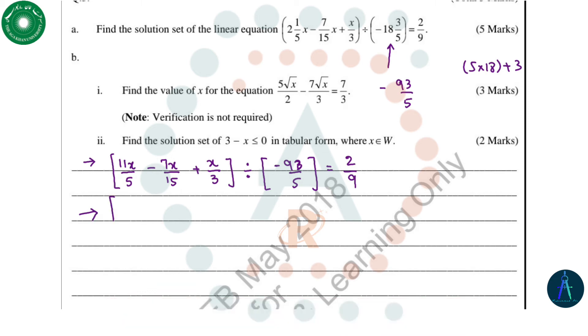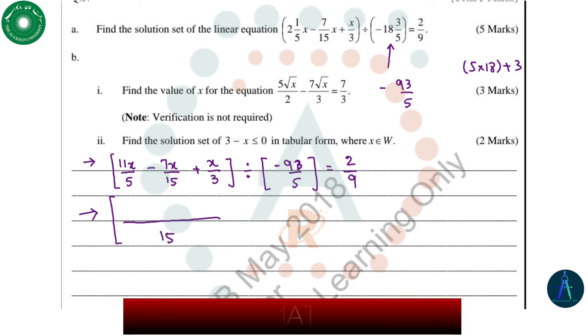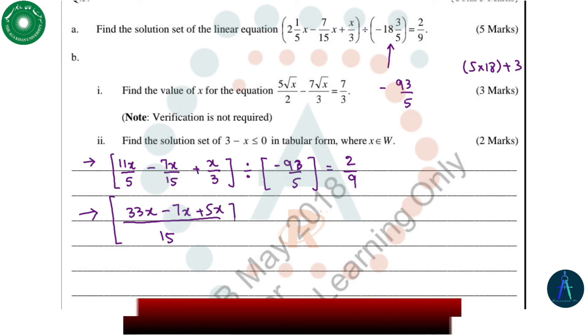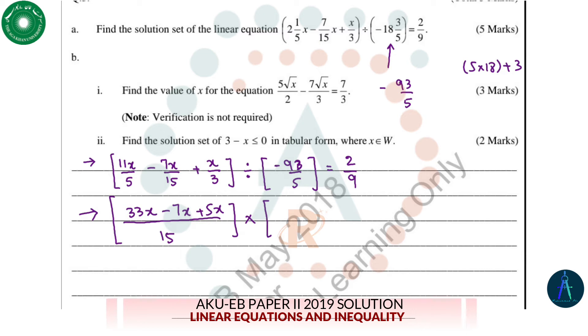And then 2/9, so this is the first step. In the second step, for this first bracket we take the LCM, and LCM will be 15. So 15 divided by 5 is 3, 3 multiplied by 11 is 33x, then we will get minus 7x and plus 5x. This time the division will be converted into multiplication.